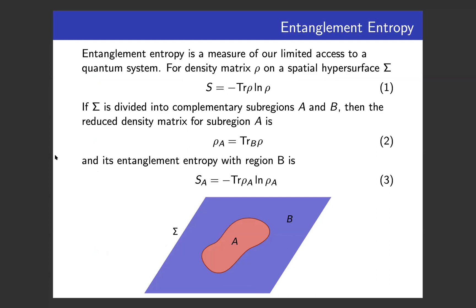Entanglement entropy is a measure of our limited access to a quantum system. This limited access could be for different reasons — for example, due to the presence of an event horizon, or due to experimental limitations, or because of some other coarse graining. Conventionally, it's defined using a density matrix rho which is initially pure, meaning we have full information about the system and the entropy is zero. The system is considered on a spatial hypersurface sigma, as in the figure.